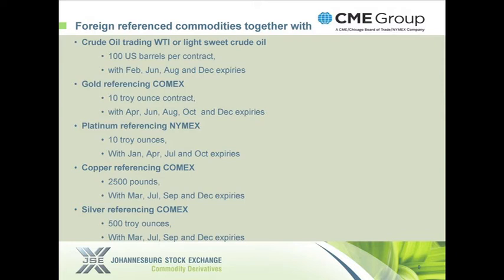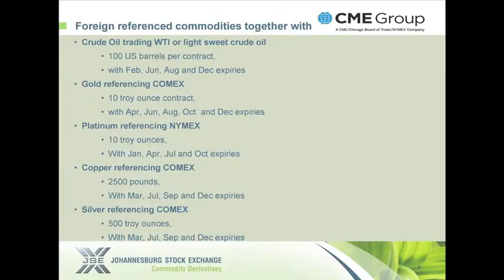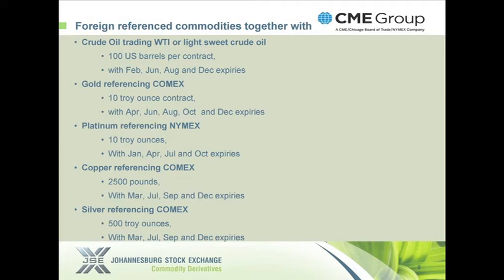For gold, the benchmark is COMEX, also headquartered in New York. We trade a 10 troy ounce contract — a mini version of the US product — giving easy access via online trading platforms with lower initial margin requirements. We also have a 10 ounce platinum contract. Importantly, we've tied up two expiry months between gold and platinum — April and October — so you can trade the gold-platinum spread with offset margin provided. On the copper side, we recently introduced a 2,500 pound contract with March, July, September, and December expiries. For silver, it's 500 troy ounces with the same expiries as copper.